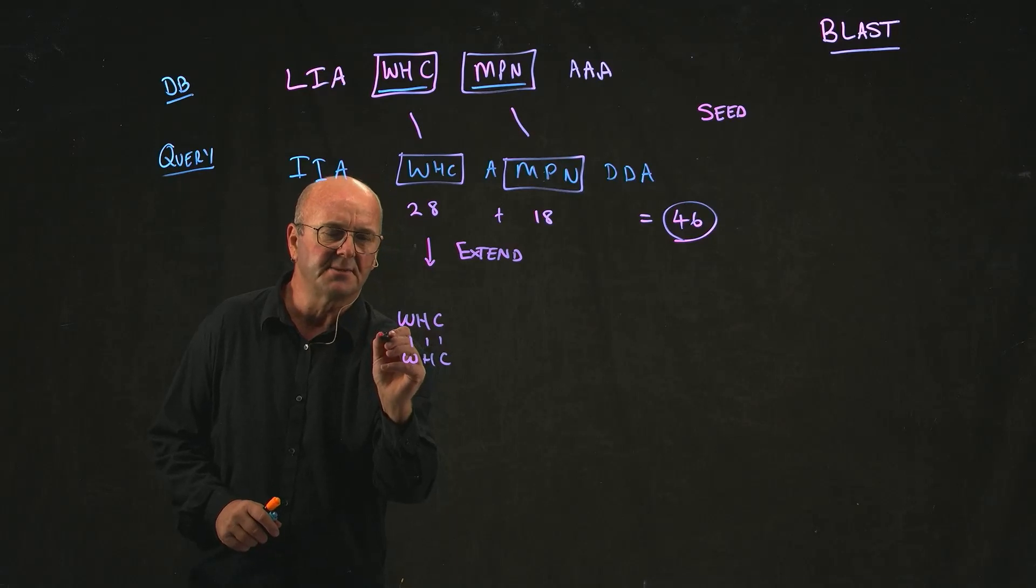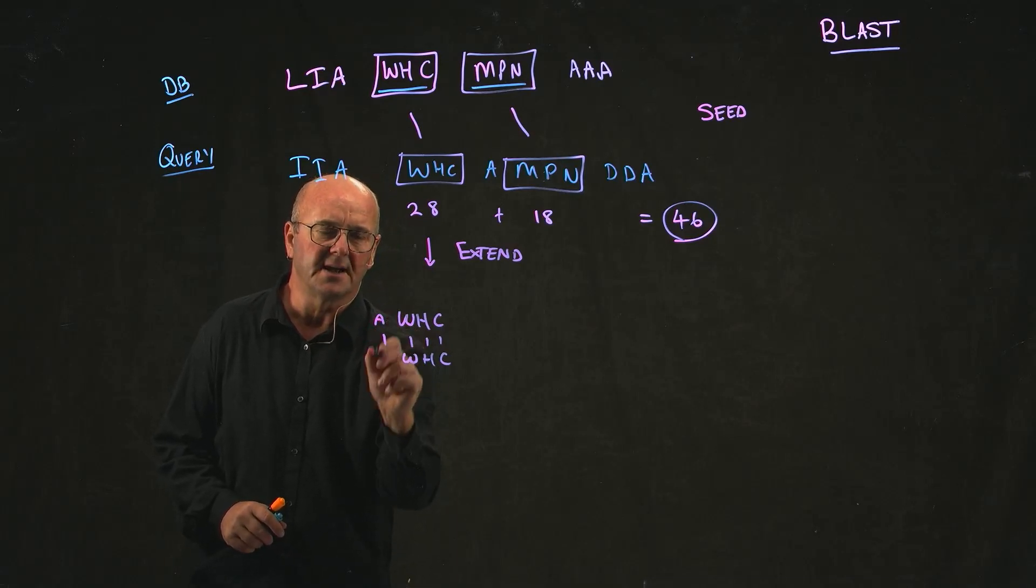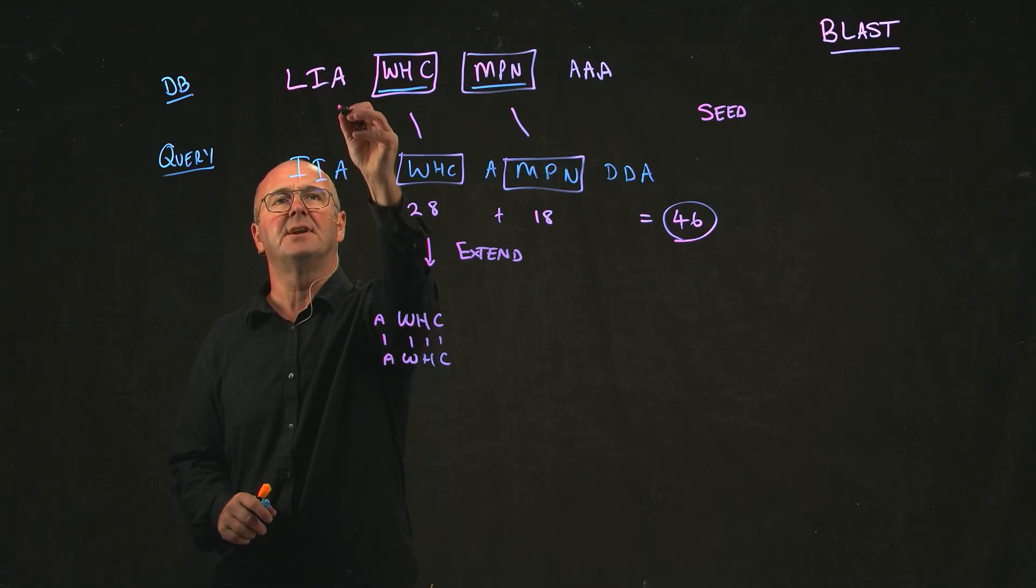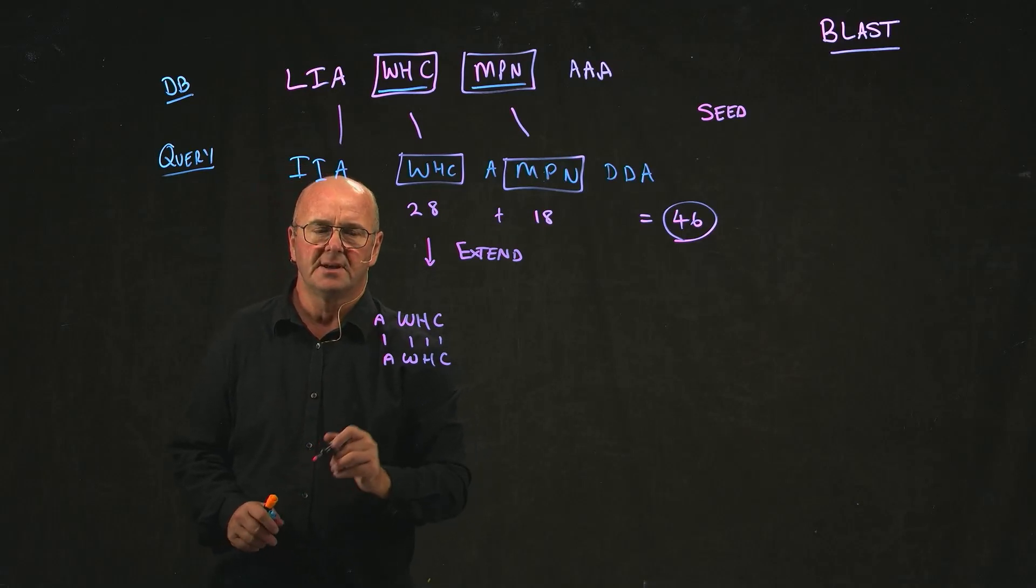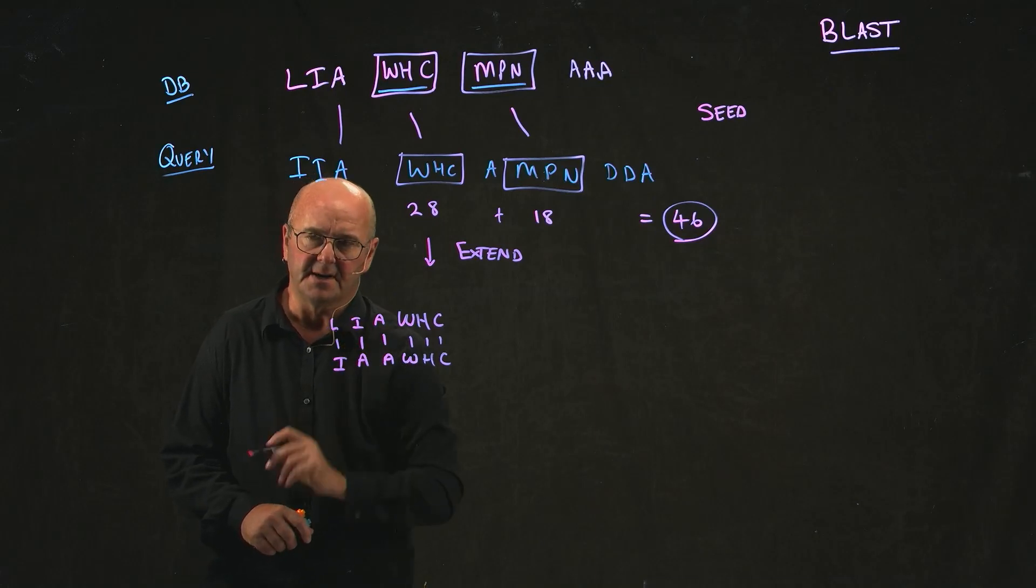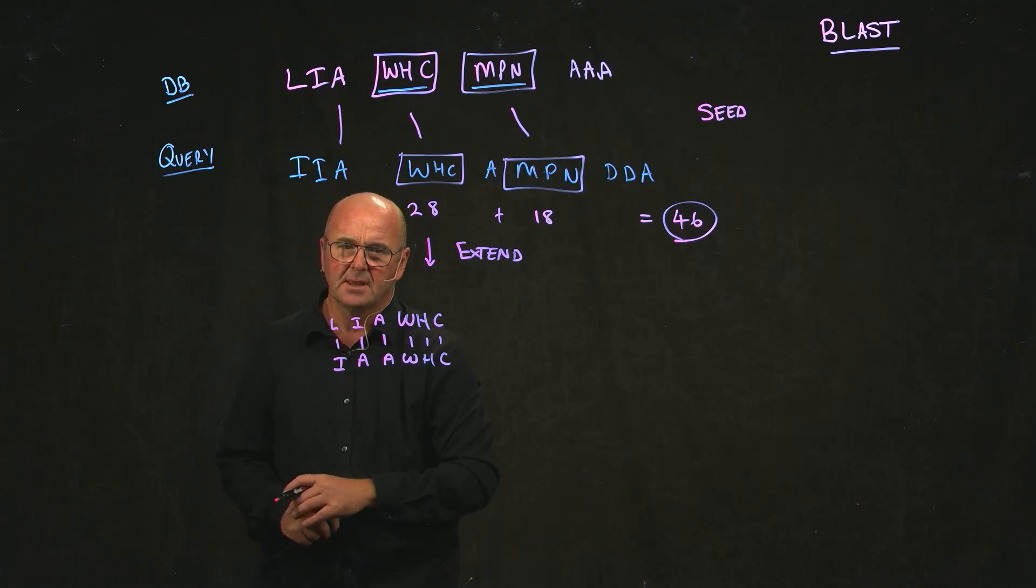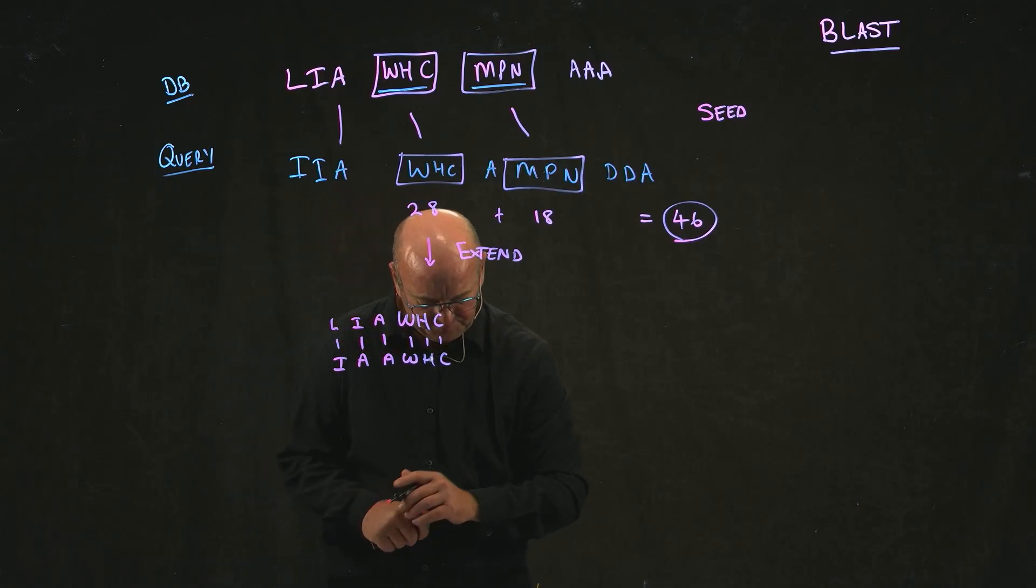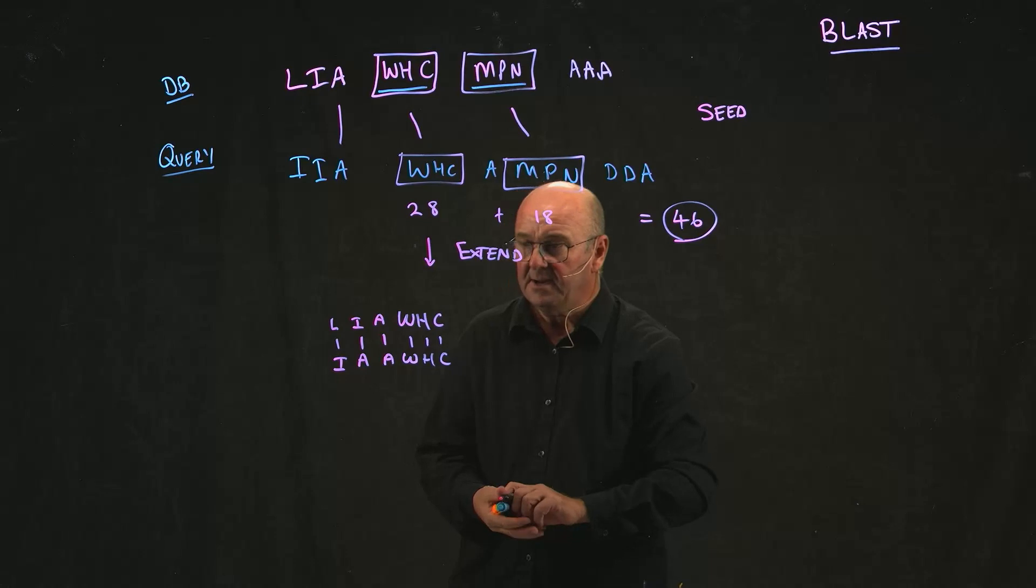And so we got a score for each of those positions. And then we go to the adjacent amino acids. And so this is an A. And of course, we have an A to an A match. And so we get another positive score. And then we get an I to an A. And then we get an L to an I.